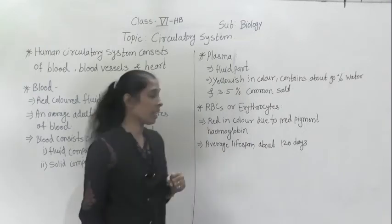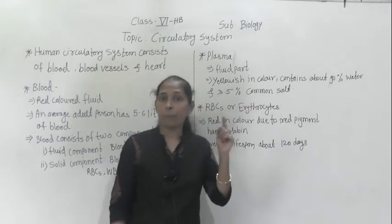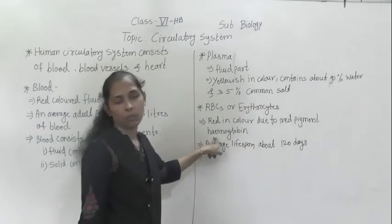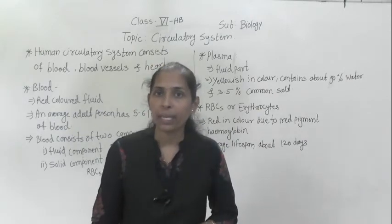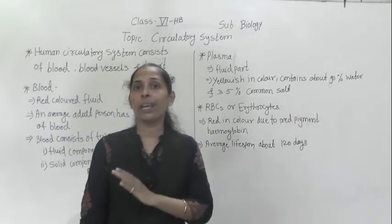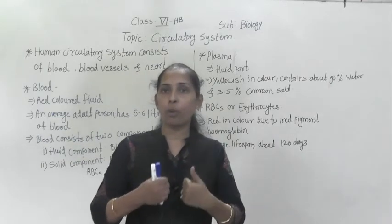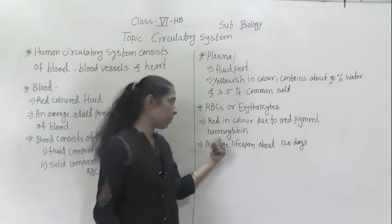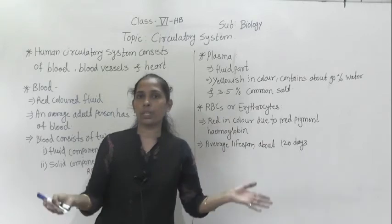Blood is red in color because it contains RBCs. RBCs are red in color due to a red pigment called hemoglobin. This hemoglobin helps to mix oxygen — coming from the lungs — into the blood, which then gets transported to different parts of the body.